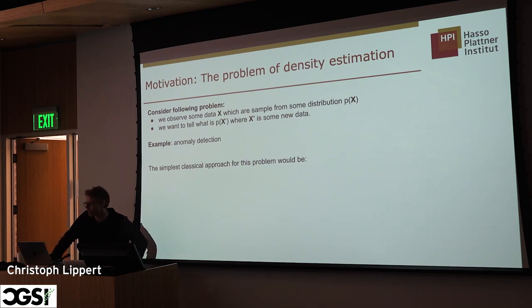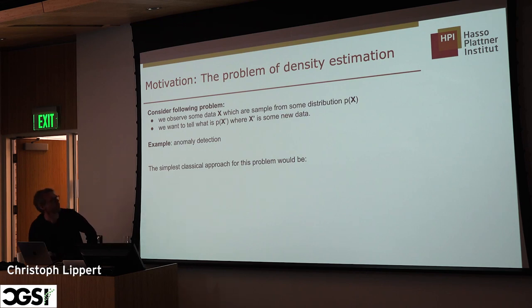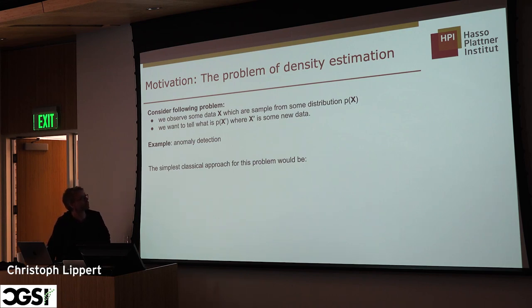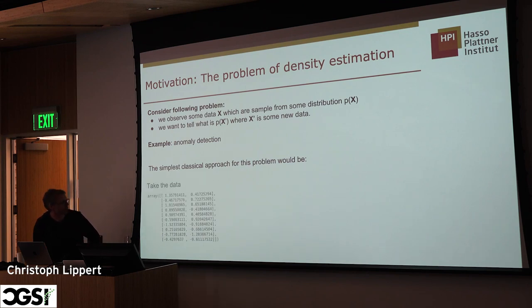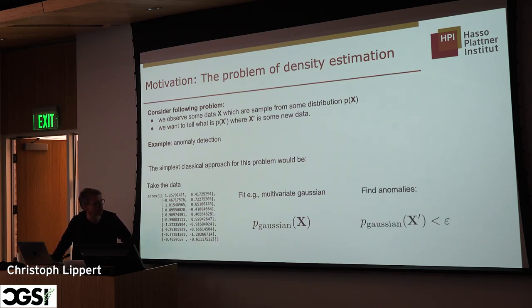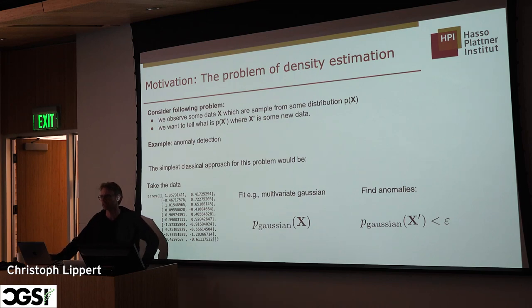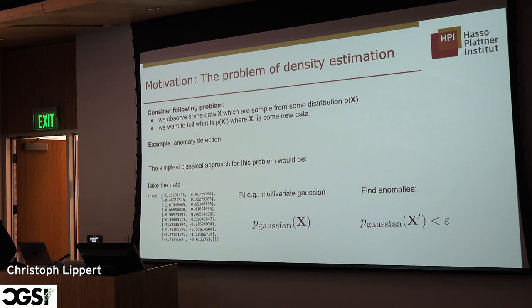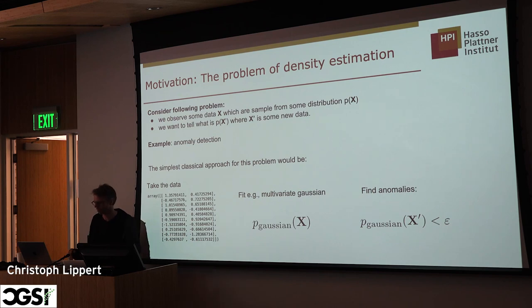One thing we can do with this is density estimation: we observe some data x from some probability distribution p(x) and we want to recover p(x). This enables anomaly detection — you fit a probability distribution to data and ask whether a new data point is likely to come from that dataset. That is really hard if you don't have access to the likelihood, because you never know what scale your threshold should have. With flows, you can say this is a low-probability sample.